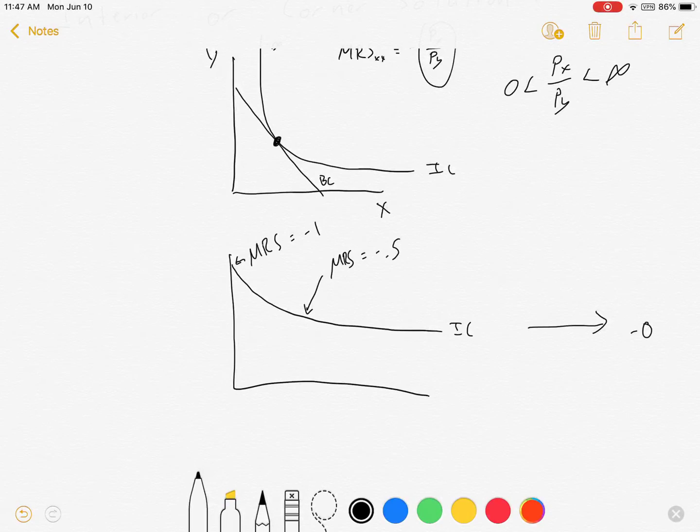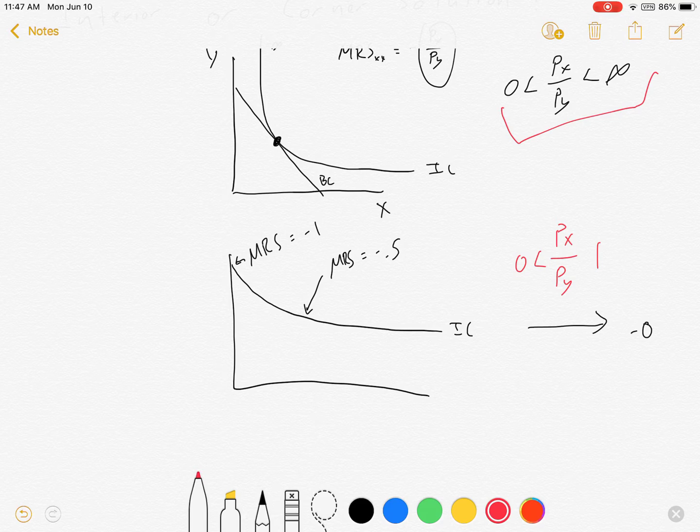Well now we've got a limitation on our price ratio that would allow for interior solutions. Instead of being able to exist between 0 and infinity, and having anything given an interior solution, now the only way to get an interior solution is to have somewhere between 0 and 1. Unless the price ratio is in that range, it will be impossible to get a tangency condition.